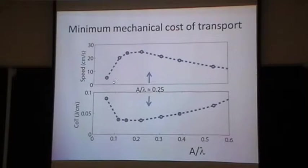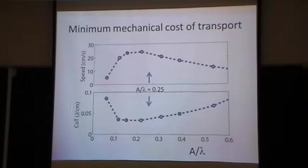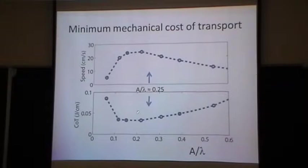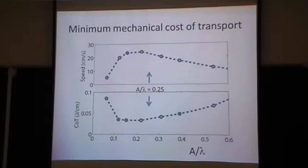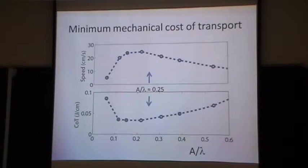Here's a recent result: we showed speed as a function of A/lambda — we can also ask the cost of transport: how many joules to move a centimeter through the material? We find a broad minimum in the mechanical cost of transport, which we don't yet fully understand. But there could be an energetic argument for why the animal favors this particular A/lambda. In simulation we integrate forces times distances divided by distance traveled to get mechanical energy.